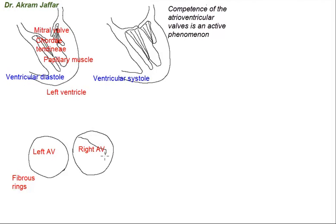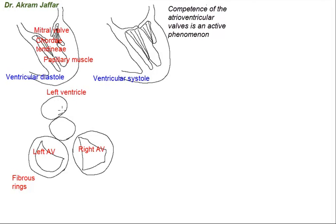This shows the cusps of the tricuspid valve on the right side. On the left side is the mitral valve with its two cusps. More anteriorly are the openings of the aortic valve and the pulmonary valve. These openings are also surrounded by fibrous rings. The function of these fibrous rings is to keep the orifices of the atrioventricular and semilunar valves patent and prevent overdistension — another factor that maintains the competence of these valves.